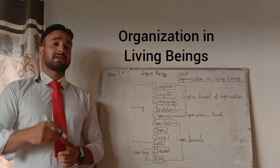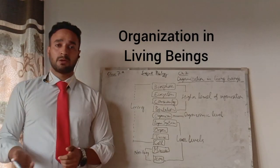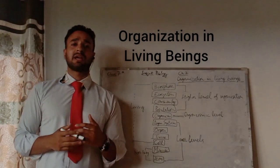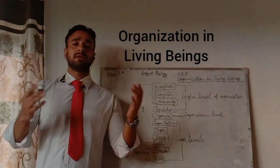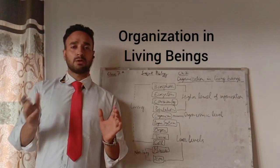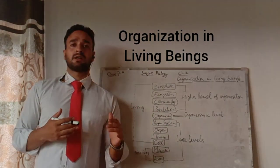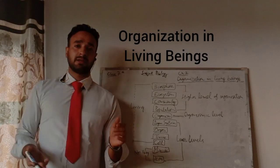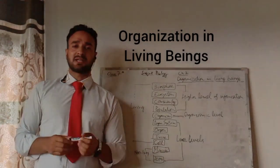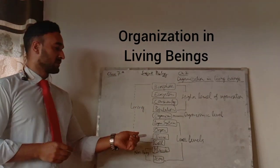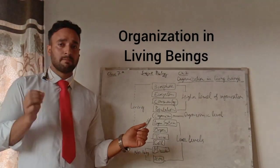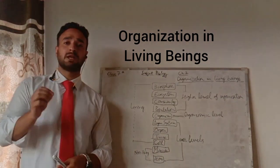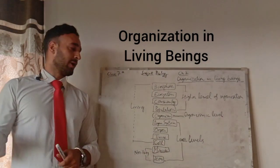In the case of multicellular organisms, they have millions and billions of cells, and all those cells work and function in a coordinated manner to perform a specific function. So the cell is the basic level of organization, or we can call this the cellular level of organization.